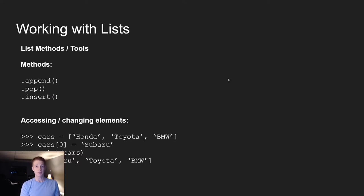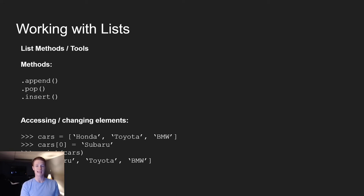We're also going to be working with lists pretty often. The basic methods are append, pop, and insert. Append adds something to the end of a list. Pop removes something from the end of a list by default and returns that value so you can store it somewhere else. Insert places a specific element at a specific index in a list. We can also access and change elements at those indexes. In this example with cars — starting with Honda, Toyota, BMW — when we replace index zero with Subaru, we officially change that list. So take a moment to refresh on strings and these list methods.